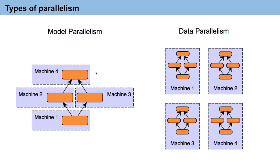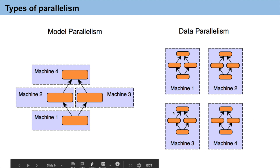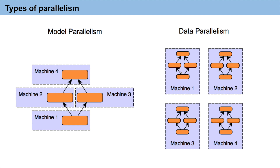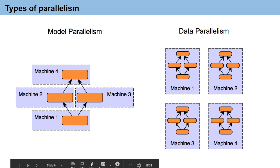Now we discuss the types of parallelism from a deep learning perspective: first is model parallelism and the other is data parallelism. In data parallelism, we have a large amount of data and we train it using multi-node machines. For example, with a batch size of 32 images, we can pass 8 images to machine one, 8 to machine two, 8 to machine three, and 8 to machine four. We calculate the gradient and update — that is called data parallelism.